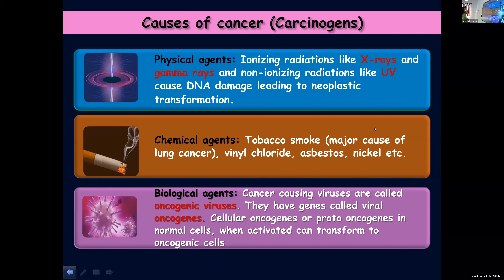Carcinogens are broadly categorized into three agents: physical agents, chemical agents, and biological agents. Physical agents include ionizing radiations like X-rays and gamma rays, and non-ionizing radiations like ultraviolet rays, which can bring about damage to DNA. Once the DNA is damaged or mutated, it can lead to neoplastic tumor cells and transform into cancerous cells. So regular or continuous exposure to ionizing and non-ionizing radiations can result in the formation of tumors.